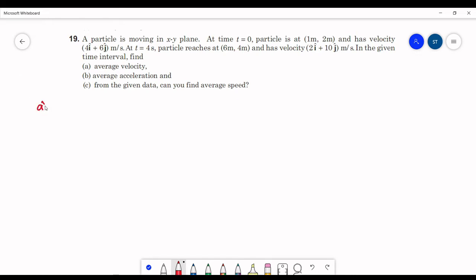We want average velocity. Average velocity is overall displacement upon overall time taken. Overall displacement we can write as final position vector minus initial position vector upon time taken.